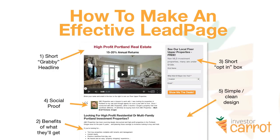There are certain elements on a lead page that have to be there to make it work, and some that are optional but make it work better. Number one: you've got to have a short, grabby headline that really grabs someone's attention — it hits them right between the eyes with what they're thinking about at that second and how you can help them. With this specific one, 'High Profit Portland Real Estate — 15 to 20% Annual Returns.' If you're in Portland and looking to buy real estate with a good return, that's going to stop you in your tracks.